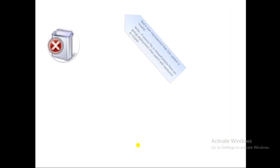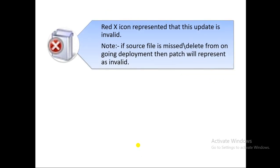The red cross icon means the update is invalid. If you see this icon, the update is not valid. This happens when the source file is missing or deleted during an ongoing deployment in SCCM — if the source file gets deleted, the patch will show a red cross or red X. These patches are invalid and will not deploy because the source file is not available.